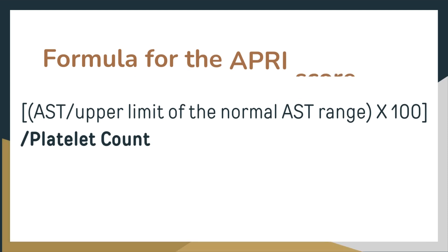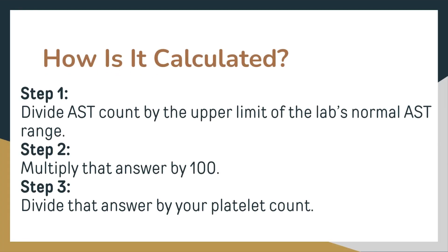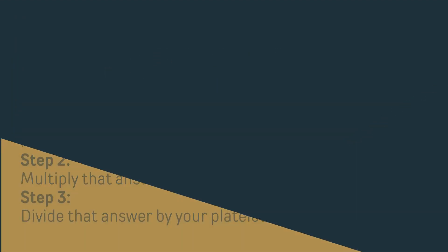Following is the formula for the APRI score and how to calculate it. Step 1: divide the AST count by the upper limit of the lab's normal AST range. Step 2: multiply that answer by 100. Step 3: divide that answer by your platelet count.